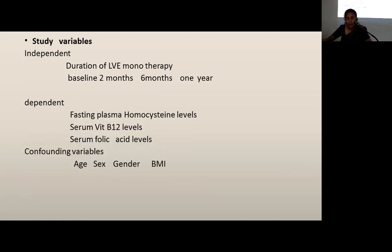The study variables have been categorized into three types: independent, dependent, and confounding. The independent variable is duration of levetiracetam monotherapy — baseline, two months, six months, and one year. Dependent variables are fasting plasma homocysteine levels, serum vitamin B12 levels, and serum folic acid levels. Confounding variables are age, sex, and BMI.